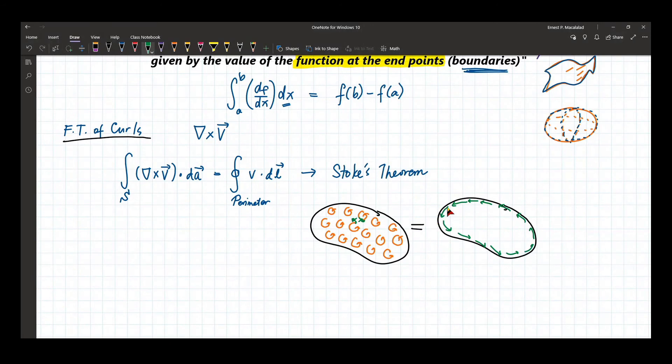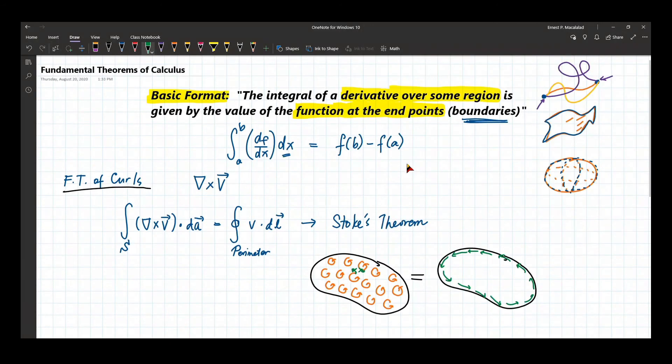So just like your fundamental theorem of gradients, of divergences, or Green's theorem, or divergence theorem, this Stokes theorem is a convenient way to reduce the dimensionality of your integral. That is, from a surface integral, we can reduce that into a line integral, which is basically easier to integrate rather than a double integral in this case.